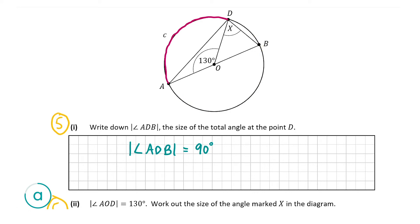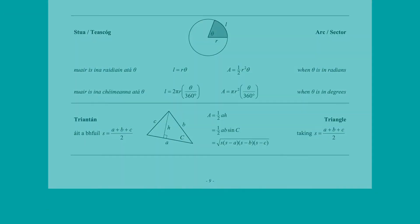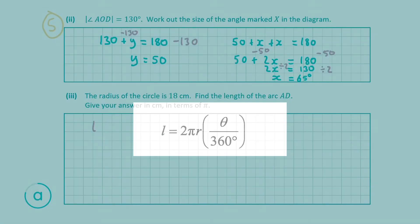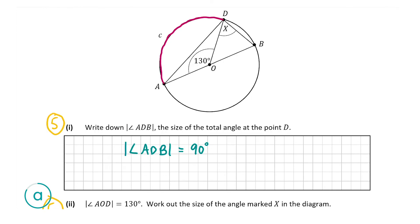We have a formula in the formula tables book for the length of an arc — on page 9. The length of the arc equals 2 times pi times the radius times the angle theta, divided by 360 degrees. The radius is 18. Theta is the angle between A and D, which we can clearly see is 130 degrees.